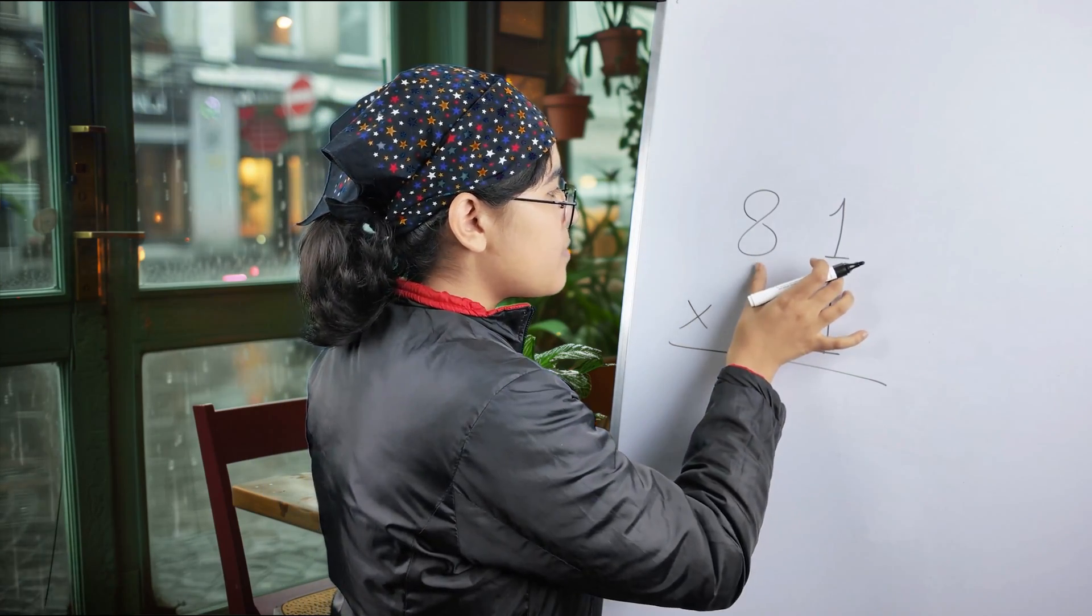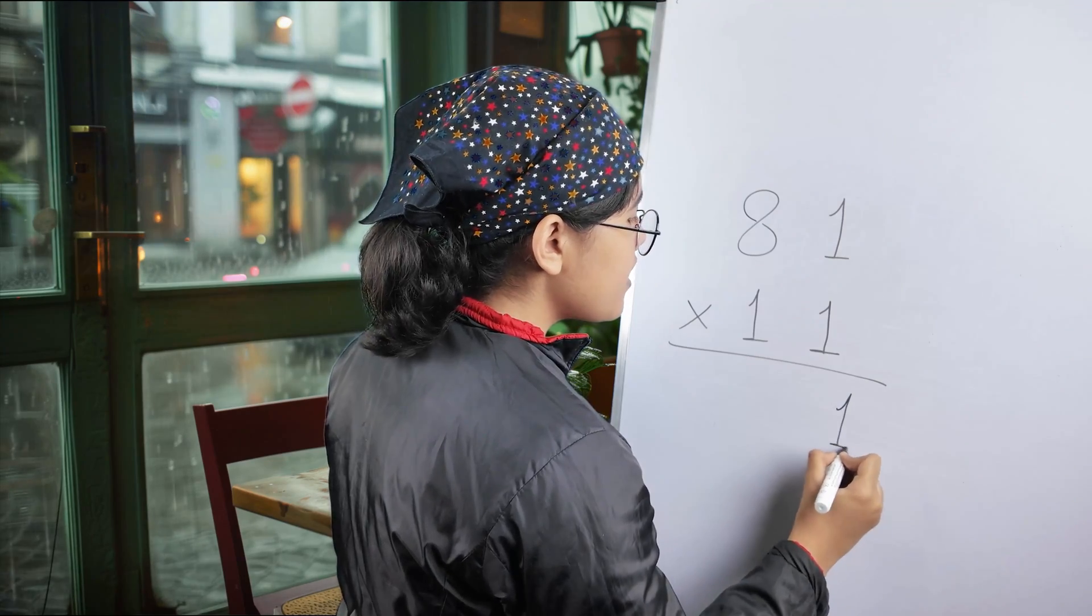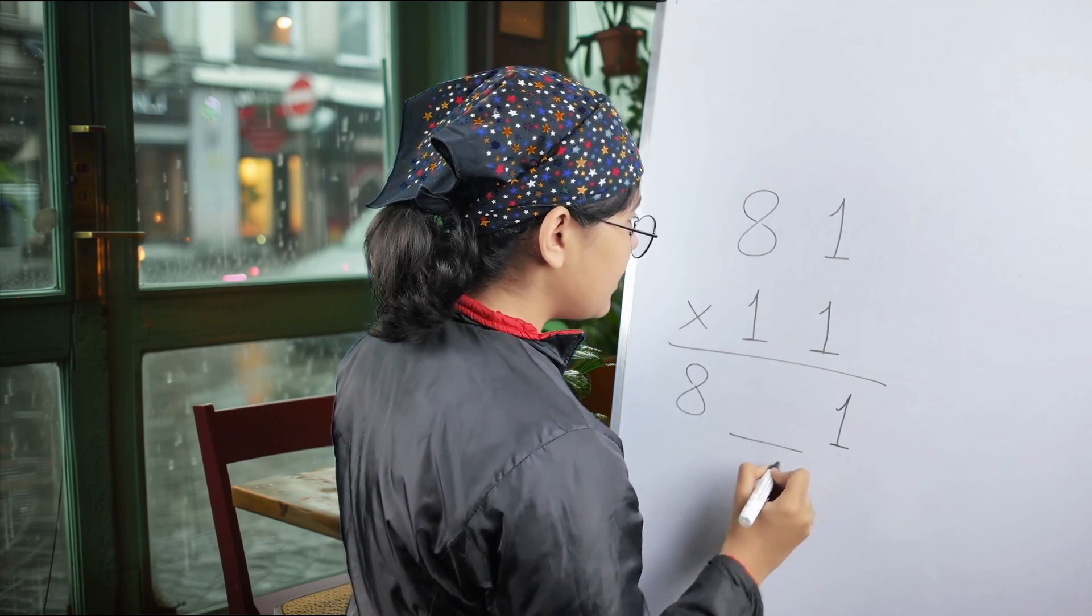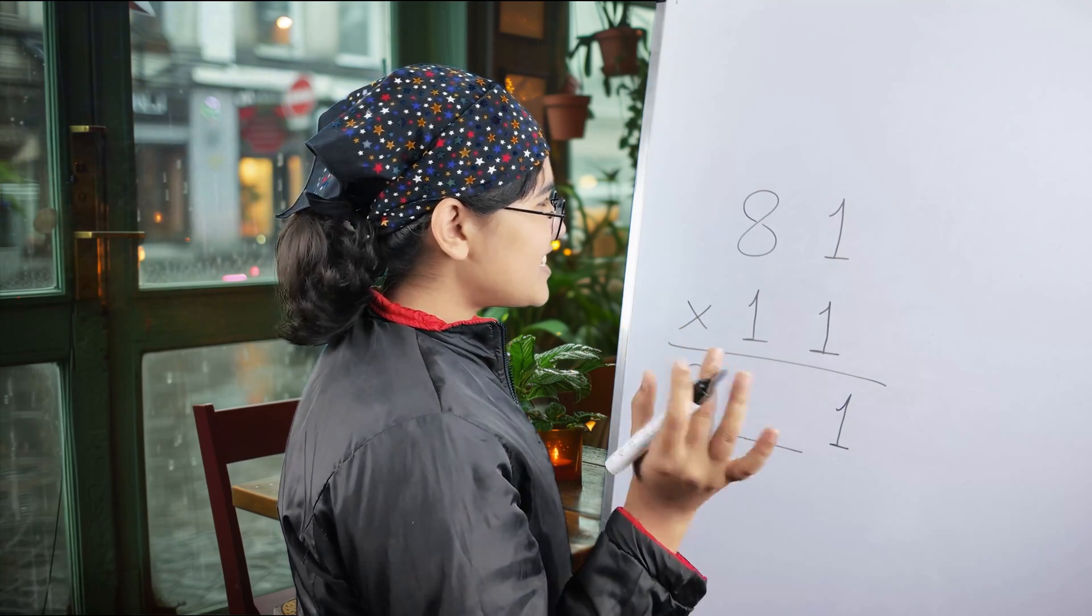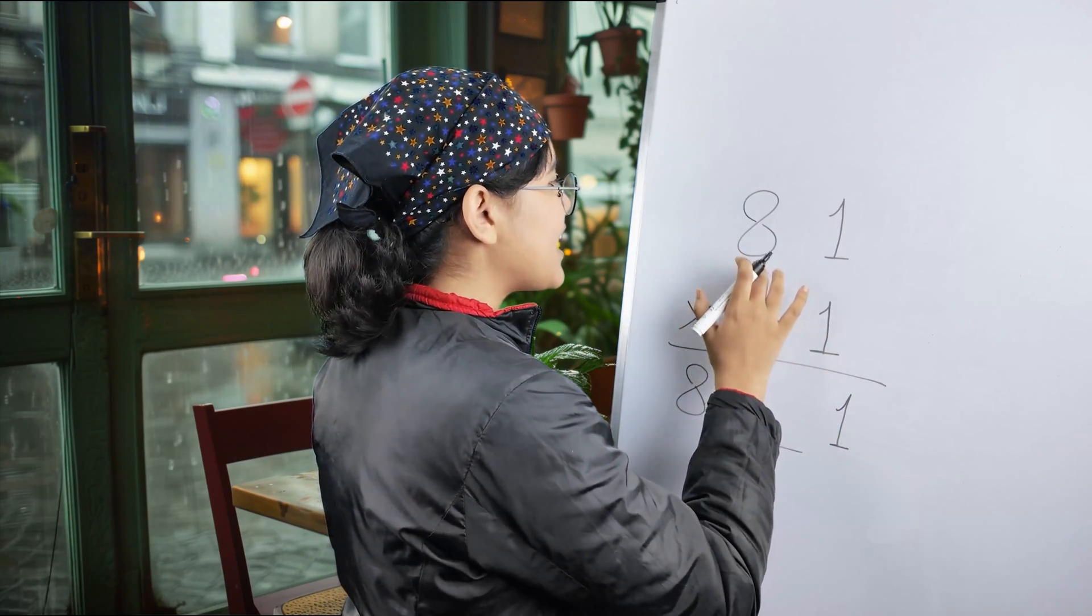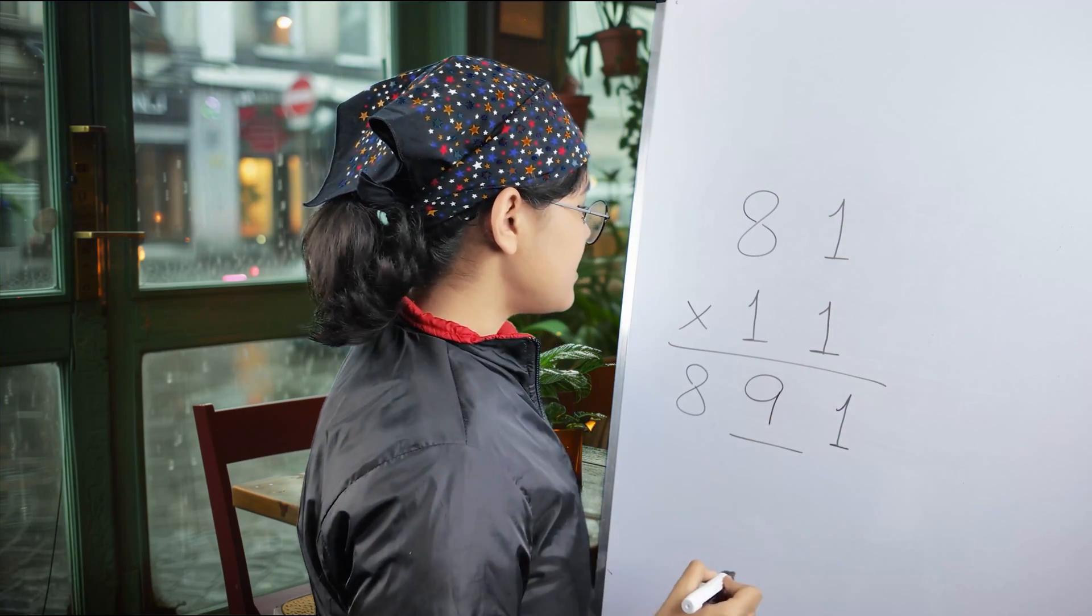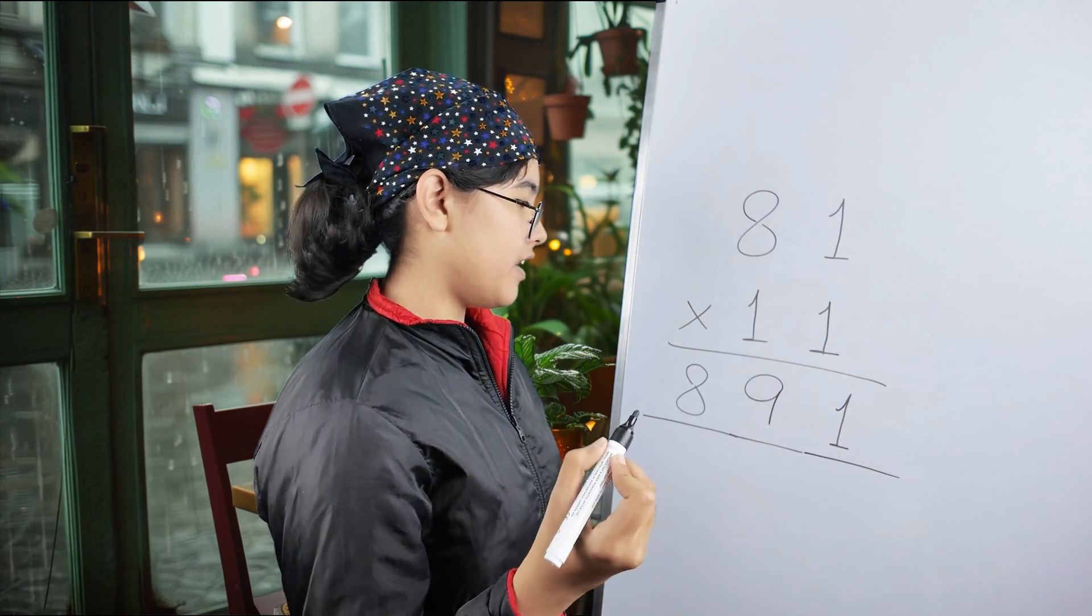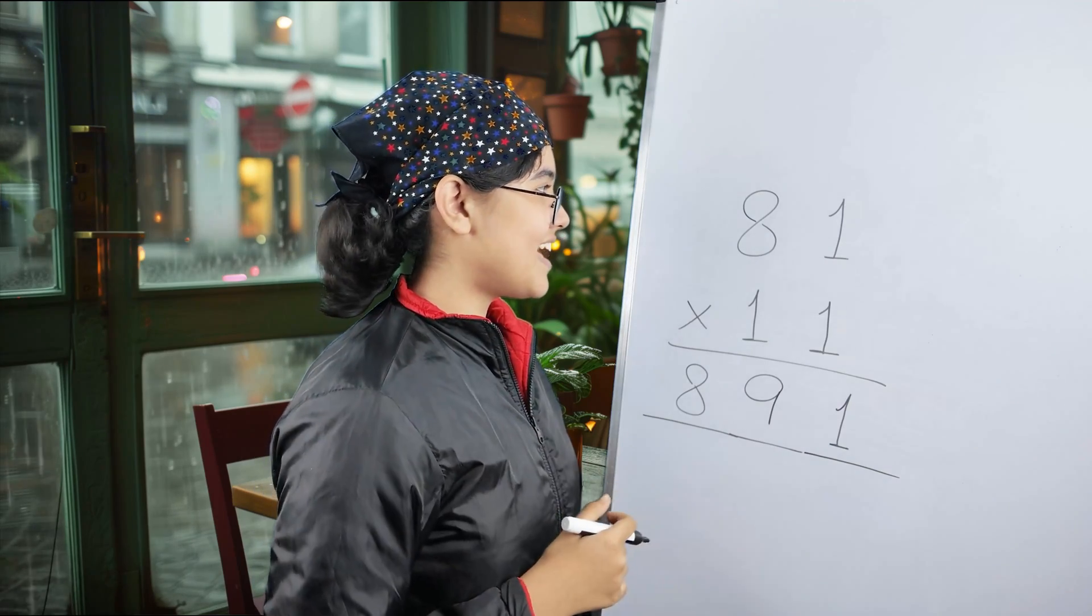We'll take the two numbers: 1 over here and 8 over here, keeping a little space in the middle. We'll just add the numbers. 8 plus 1 equals 9, so we'll put it in the middle. Your answer is 891. Simple? I'm sure it is.